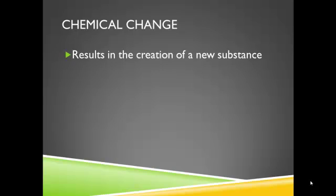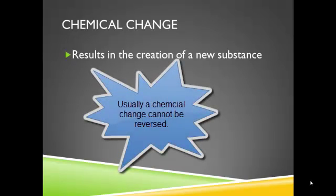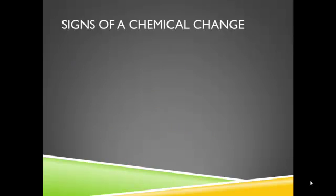A chemical change, on the other hand, results in the creation of a completely new substance. It's a lot easier to come up with examples of chemical changes than physical changes, and I'll show you why in the video in a minute. There are six signs of a chemical change. I'm going to mention some of them in the video you're about to see, and then after the video I'm going to come back to this again.